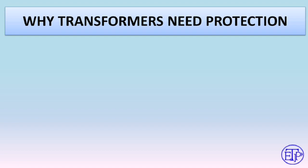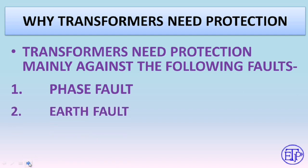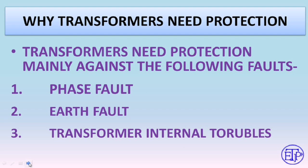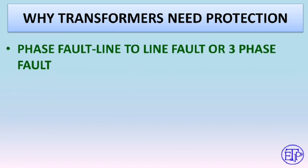Now, why does a transformer need protection? Transformers need protection mainly against the following faults: number one is phase fault, number two is earth fault, and number three is transformer internal troubles. Phase fault is basically a line-to-line fault or three-phase fault. No part of the conductor is connected with the earth — it is a non-earth type fault.